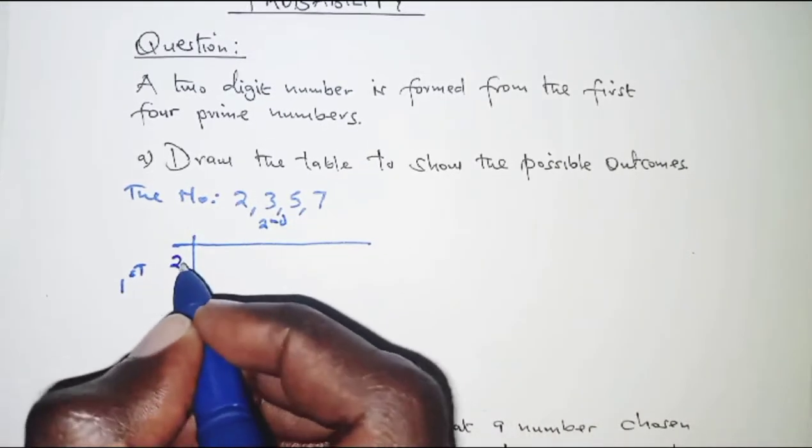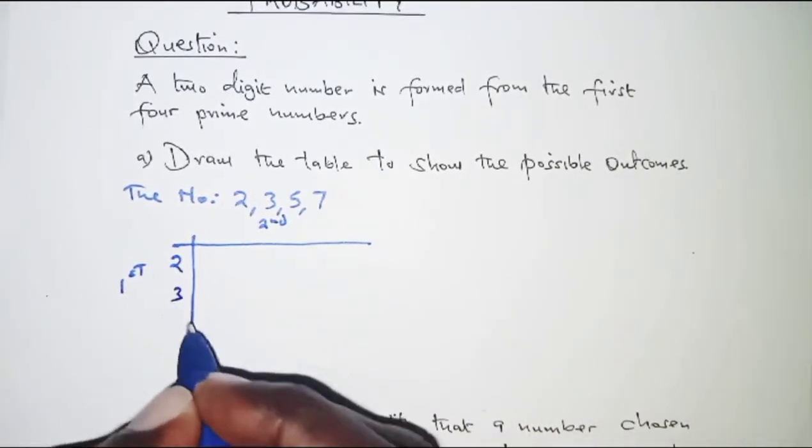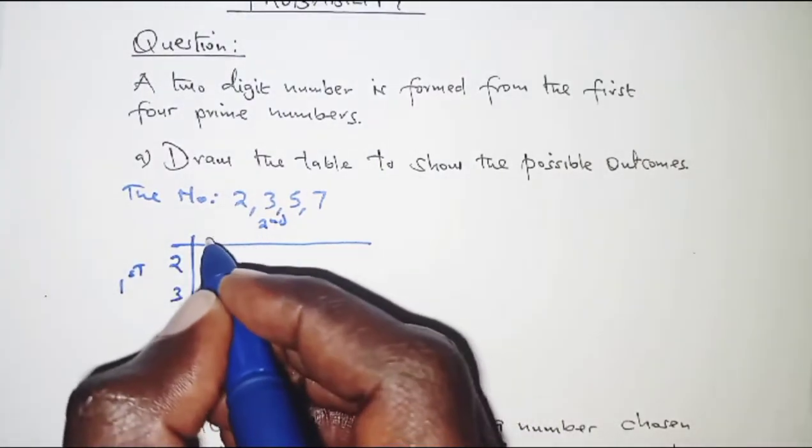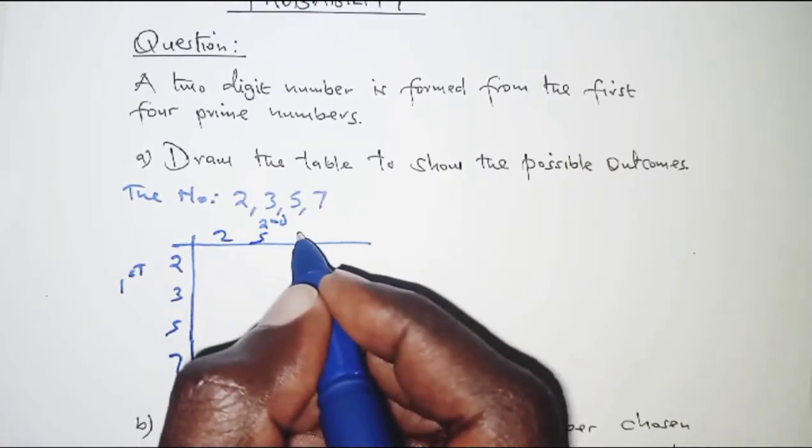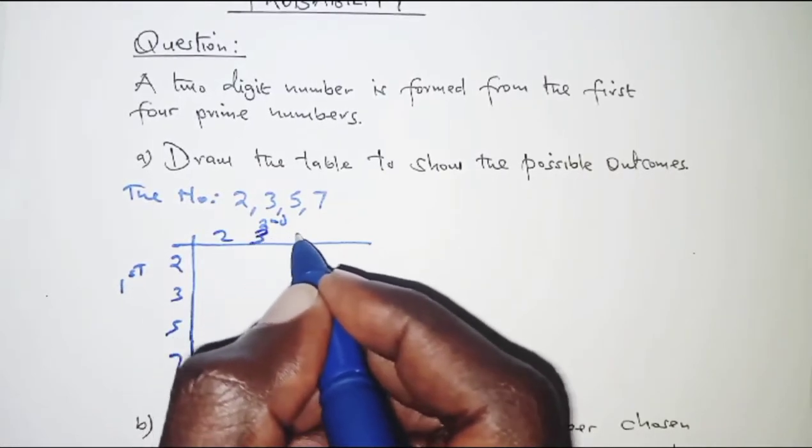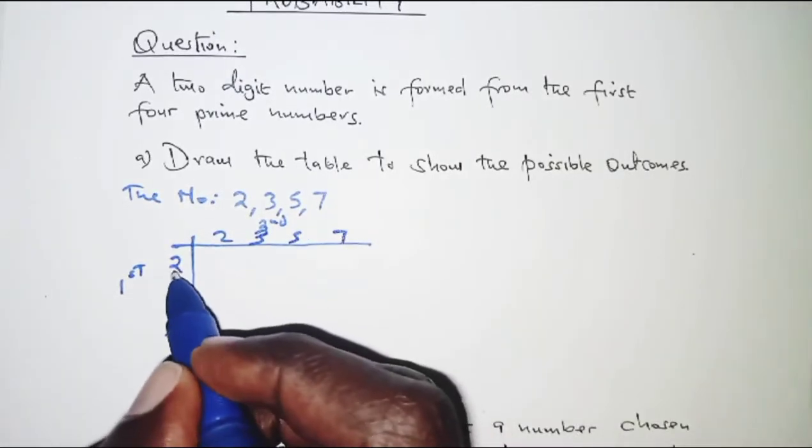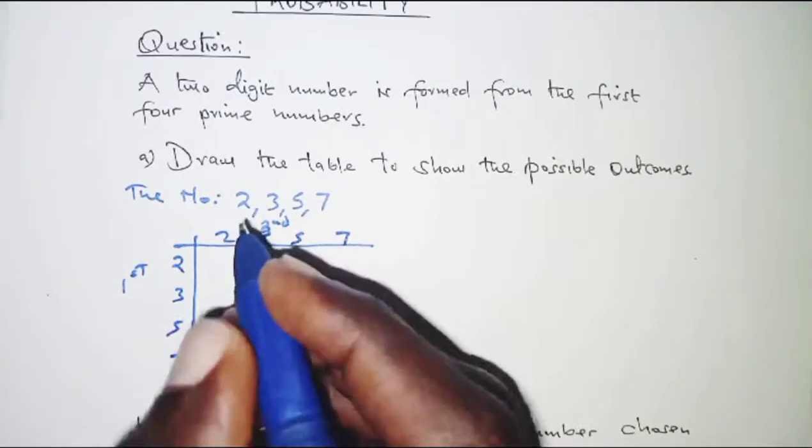So for the first digit we have the numbers as 2, 3, 5 and 7. For the second digit we also have the same 2, 3, 5 and 7. So that the numbers become 2, 2 for 22.